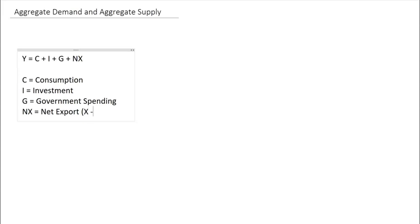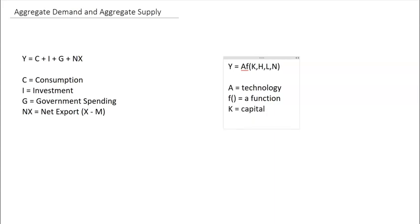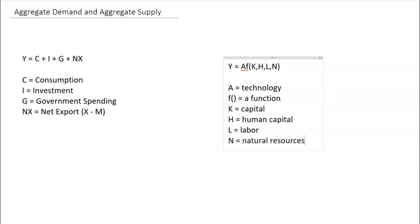We said Y was equal to C plus I plus G plus NX, where C is consumption, I is investment, G is government spending, and NX is net export, which is basically X minus M. We also mentioned that GDP equals A times a function F of K, L, H, N, where A is technology, F is a mathematical function, K is capital, H is human capital, L is labor or the number of workers, and N is natural resources.